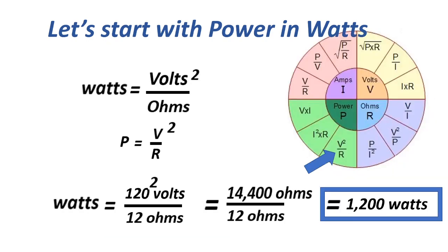The next formula for power: watts equals volts squared over ohms, or P equals V squared over R. Equals 120 squared over 12 ohms, equals 1200 watts.